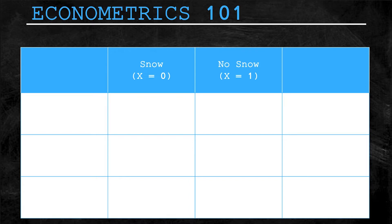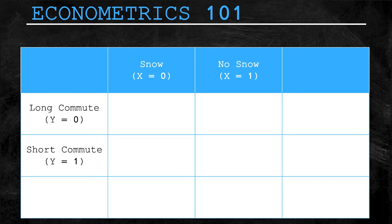The first variable X represents the weather. Specifically, X will take on a value of zero if it snows, or one if it doesn't snow. There is no other option — it either snows or it doesn't; X equals zero or it equals one. The other variable Y represents the length of your commute to school. If you have a commute over 20 minutes, we will call it a long commute and Y will equal zero. If your commute is 20 minutes or less, we will call it a short commute and Y will equal one.